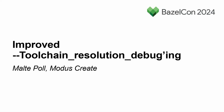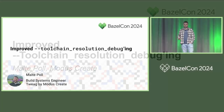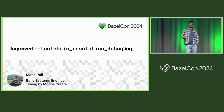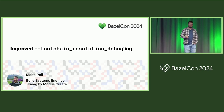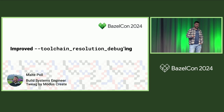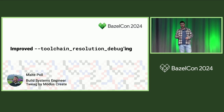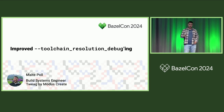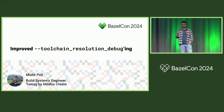My second talk today is about improved toolchain resolution debugging. I want you to put yourself in the position where you have a Bazel mono-repository with multiple target platforms, multiple toolchains to target them, and maybe remote execution — which means you also have multiple exec platforms.